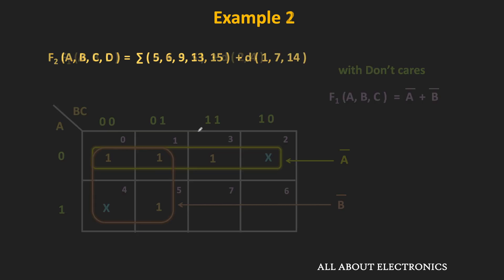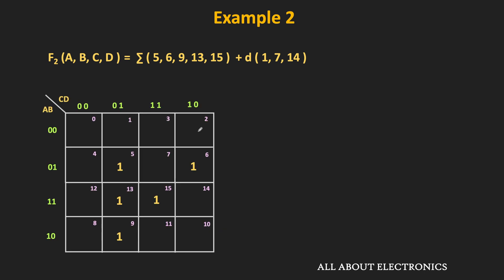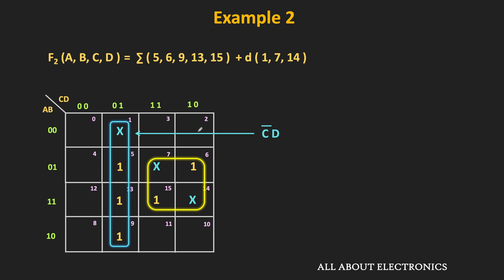Let us take a couple more examples. Function f2 is a function of four variables, and minterms m1, m7, and m14 are the don't cares. Let us represent this function in the Kmap, first writing all the minterms equal to 1, then representing the don't care minterms with x. Using don't care minterm m1, we can make the group of these four ones. Similarly, using don't care minterms m7 and m14, we can make the group of these four ones. Using these two groups alone, we are able to cover all the ones. This group in blue corresponds to C̅·D, while the group in yellow corresponds to B·C. The overall minimized function is the summation of C̅·D and B·C.